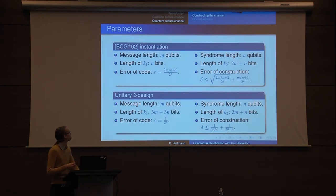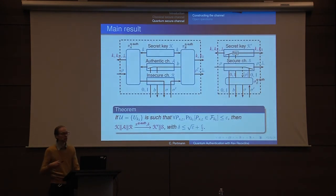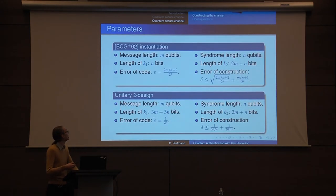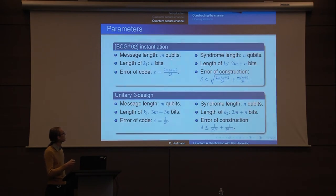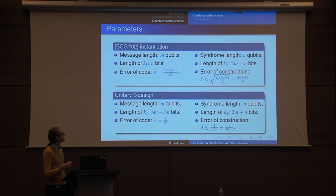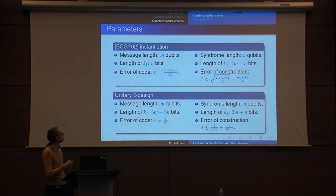Now for the parameters — I've done this in a very abstract way, but codes have been proposed in the literature. The codes proposed by Barnum and Dahl in their 2002 paper achieve this. If our message has length M and the syndrome has length N, we need N bits to choose the code — so it's actually a very compact family. N bits are also needed for the one-time pad, and we get an error that is exponentially small in the syndrome size. We can also use unitary designs, which is a larger family of codes, and get an error that doesn't depend on M.